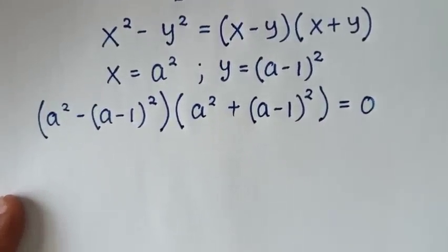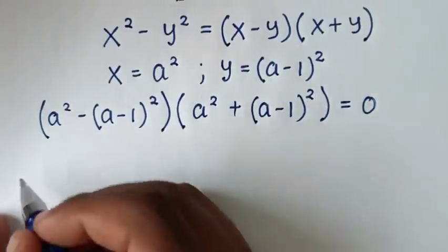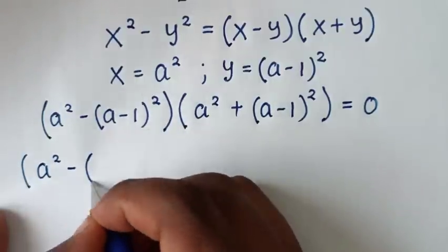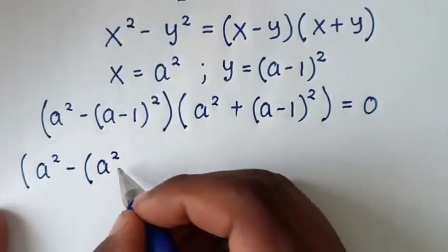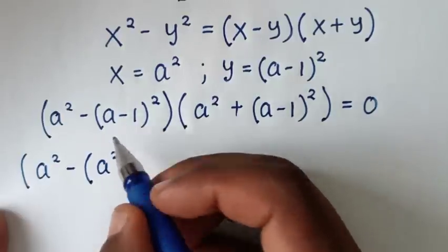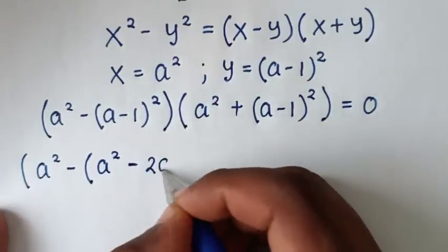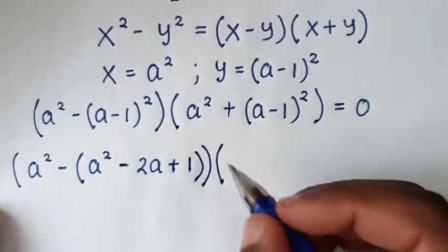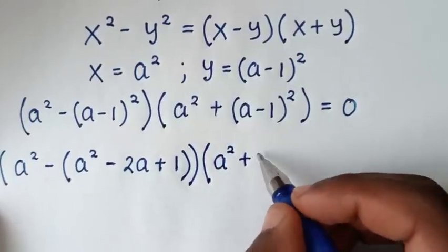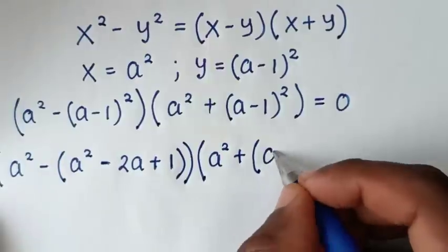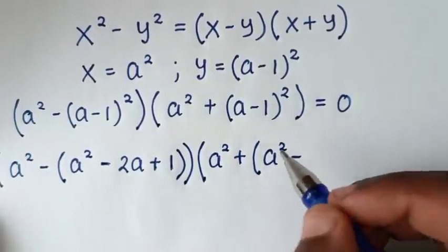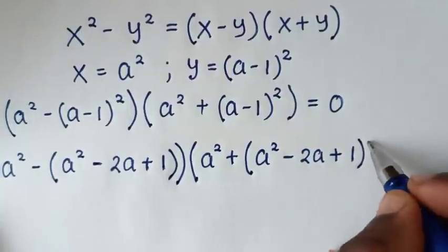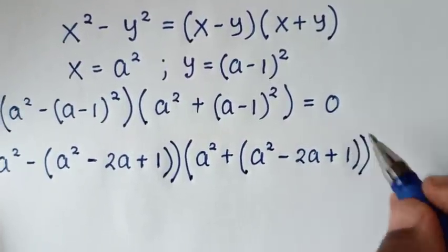In the next step, we'll expand (a-1)² in both factors. Expanding (a-1)² gives a² minus 2a plus 1. So we get (a² minus (a² minus 2a plus 1)) times (a² plus (a² minus 2a plus 1)) equals 0.